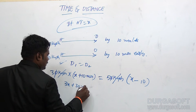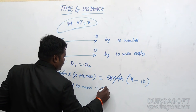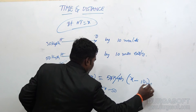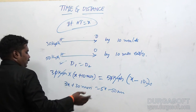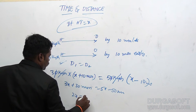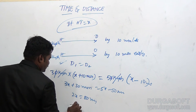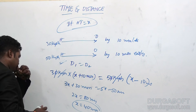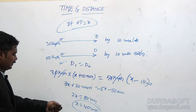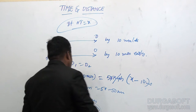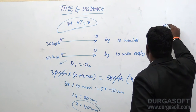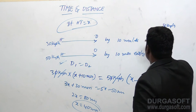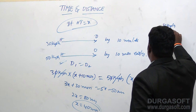Solving the equation: 3X + 30 = 5X − 50, giving 2X = 80, so X = 40 minutes. The actual travel time is 40 minutes. With a speed of 30 km/h and a total time of 50 minutes (40 + 10), the distance is 30 × 50/60 = 25 km from house to office.